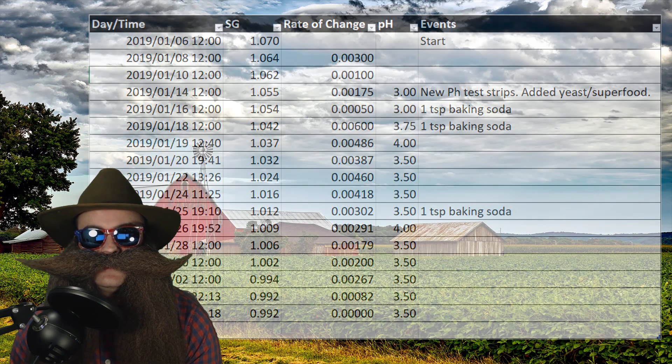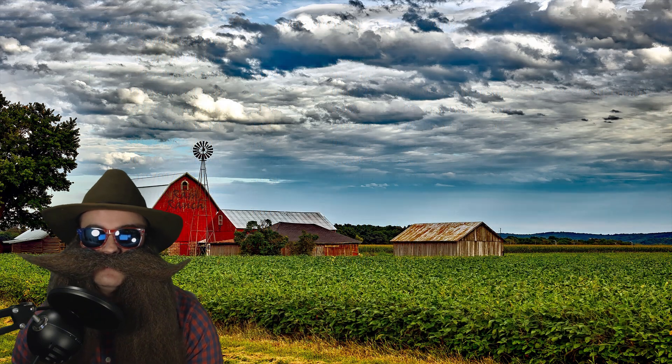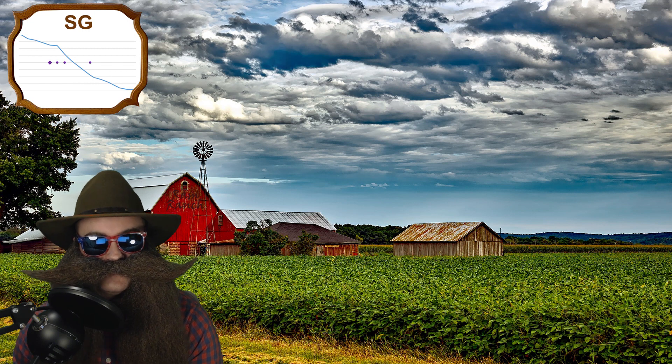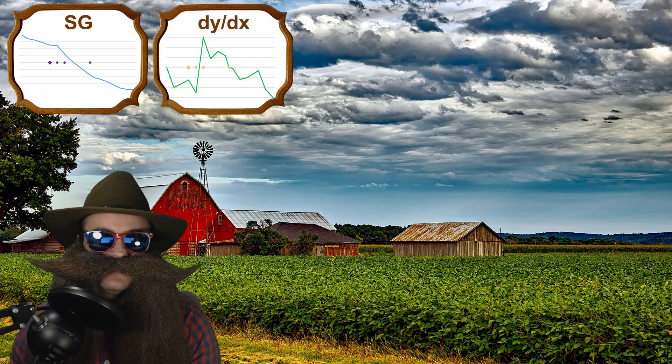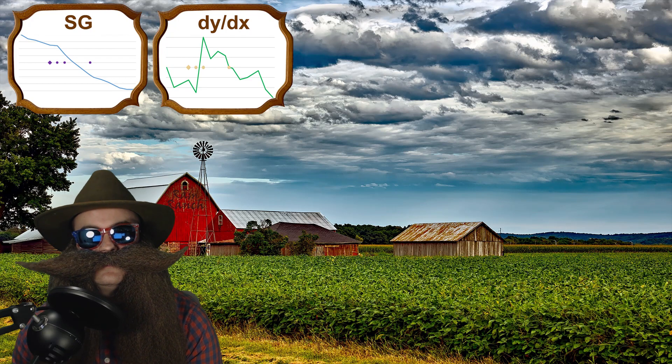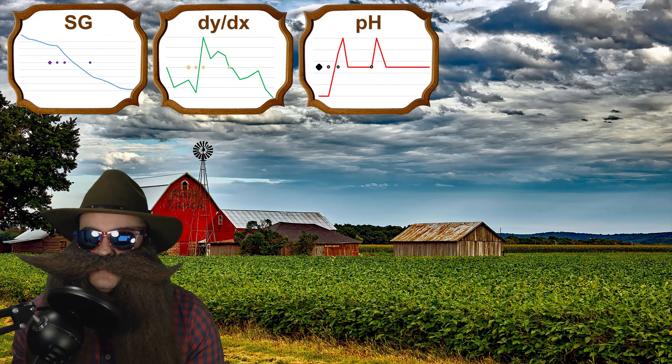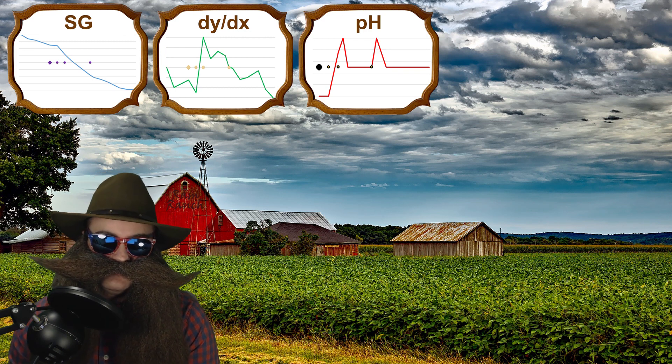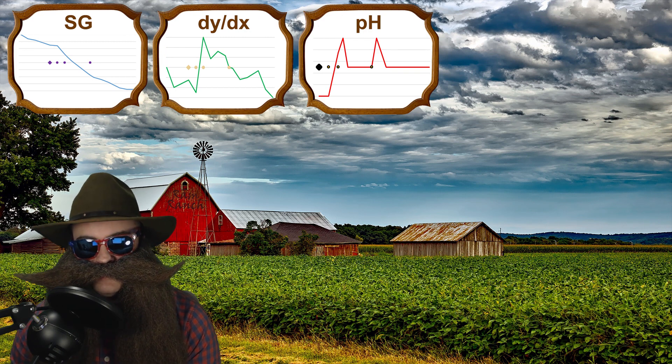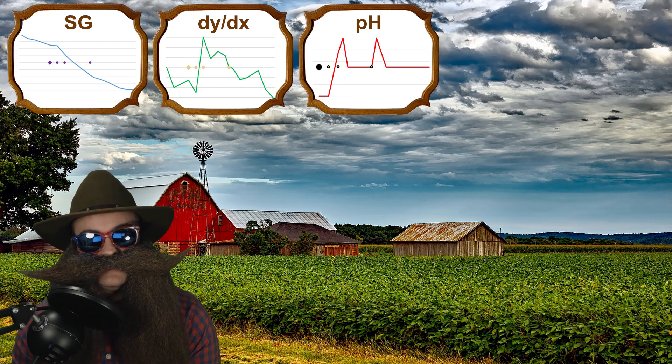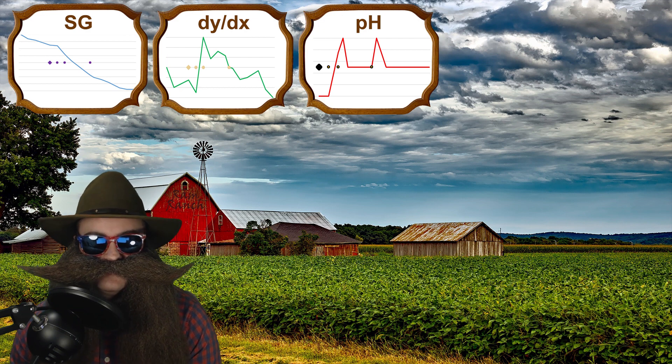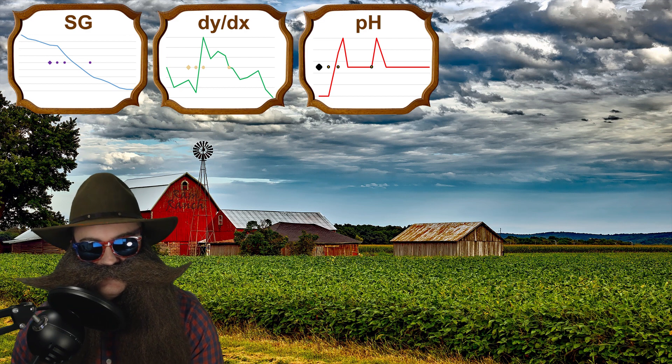So I've plotted this data into three graphs: one graph being the specific gravity readings, another graph the derivative of those specific gravity readings, and the last graph is the pH readings themselves. On the graphs you'll see some markings, diamond and multiple dots. The diamond is the yeast and nutrient addition I did, and then the dots are going to be a teaspoon of baking soda each to adjust the pH.